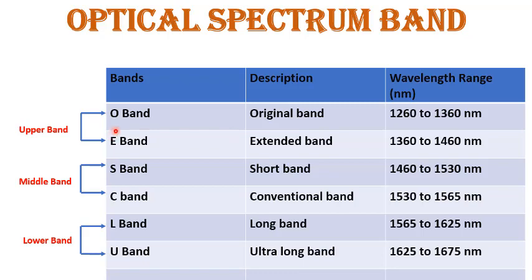The six bands are: O band, E band, S band, C band, L band, and U band — all in the range of 1260 nm to 1675 nm. These six bands are divided into three groups. The first two bands, O band and E band, are the upper band. S band and C band form the middle band. L band and U band form the lower band.